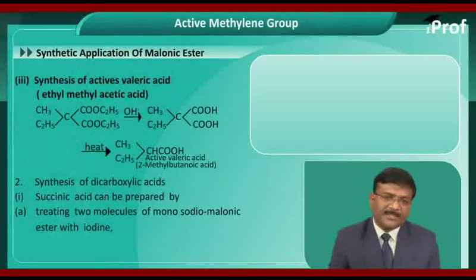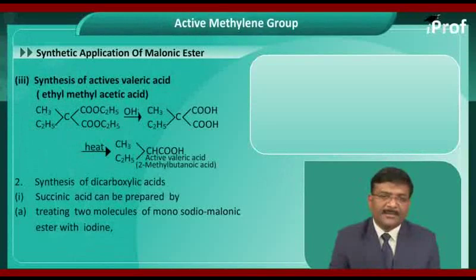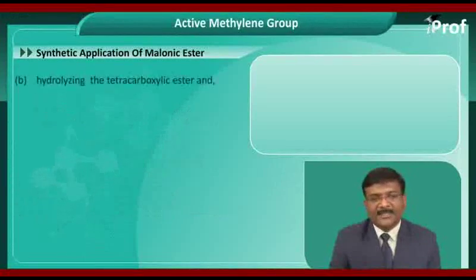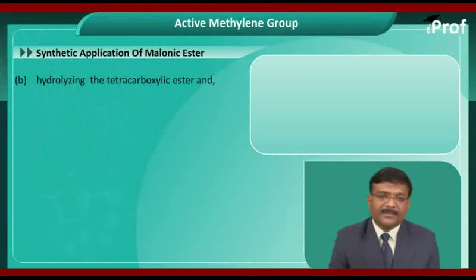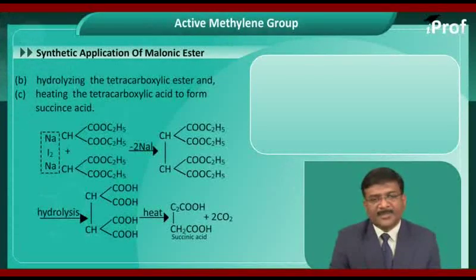Next, synthesis of dicarboxylic acid. Succinic acid can be prepared by treating two molecules of monosodio-malonic ester with iodine, or hydrolyzing the tetra-carboxylic ester, and third, heating the tetra-carboxylic acid to form succinic acid.